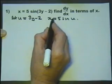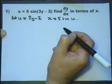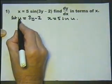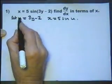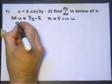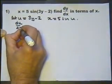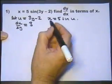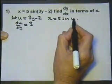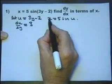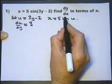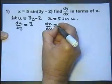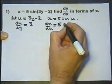Let's differentiate both of these equations. When we differentiate u with respect to y, we get du/dy. Differentiating that is just 3 — the y disappears, so there's no 2. Now let's think about this differentiating: we're differentiating x with respect to u, so x with respect to u is dx/du. And that's going to be 5 cosine — sine differentiated is cosine.